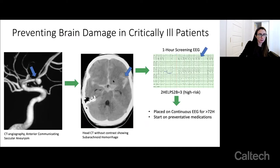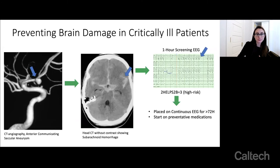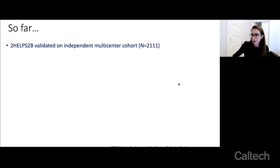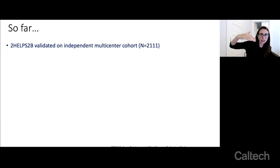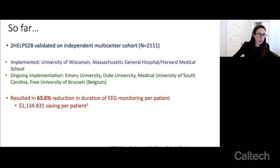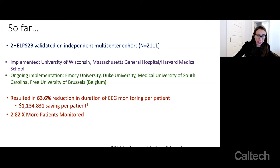The patient comes in with their aneurysm and hemorrhage, gets sewn up, and is monitored with EEG monitors. The neurologist looks at the monitor and says, 'I see this, this, and that — that means the person has a 2HELPS2B score of three, so I'm going to place them on continuous EEG monitoring for at least 72 hours and start them on preventative medications.' The model has been validated on an independent multi-center cohort. It's been implemented at several hospitals, resulting in a huge reduction in EEG monitoring duration per patient, which allowed doctors to monitor 2.82 times more patients — reducing brain damage and saving lives.